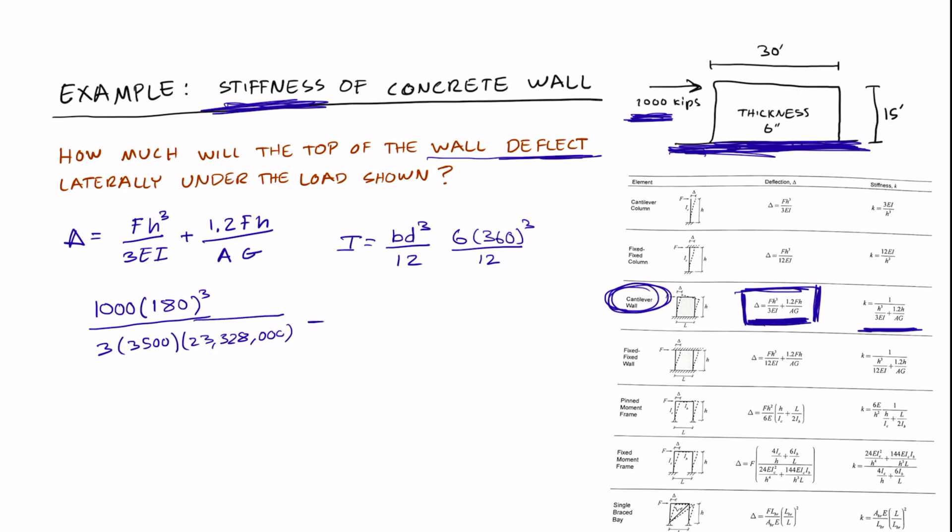That's the first part of the equation here for delta. It's not an A, it's a delta. So we have 1.2 times 1,000. That's the force again. And the height, once again, is 180.